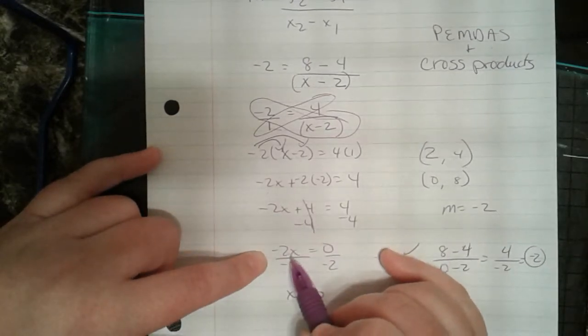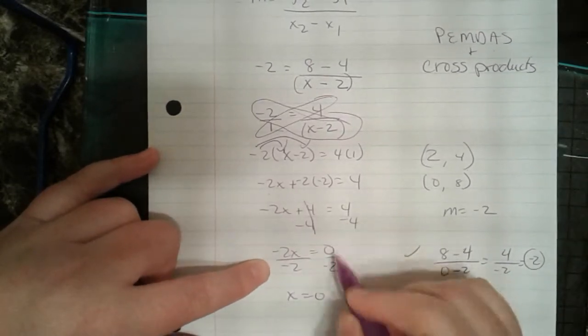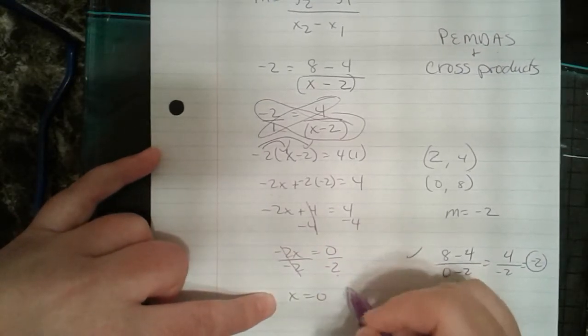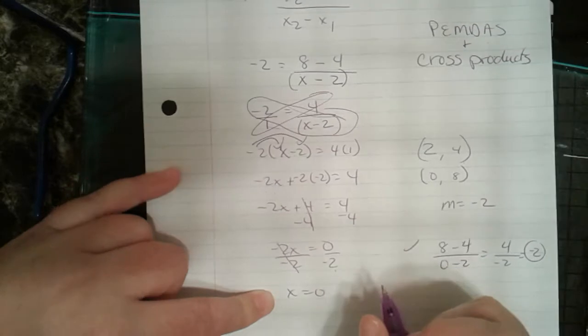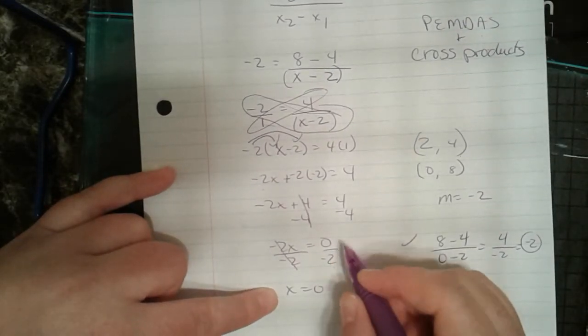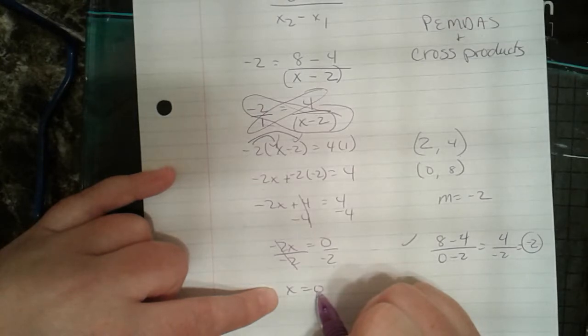And how do I get x by itself? I divide it. So this is going to leave me with x. And 0 divided by negative 2. Well, that's cool because we've already had the discussion when 0 is in the numerator. If 0 is in the numerator, then I automatically know that x is 0.